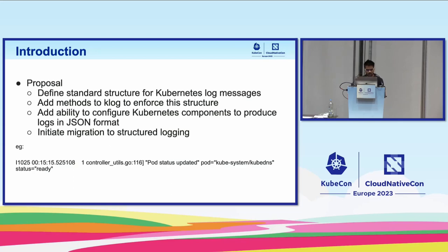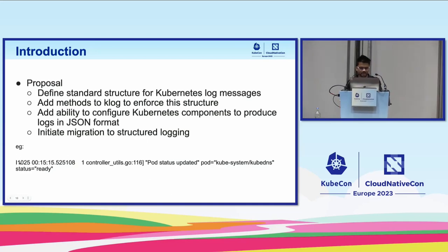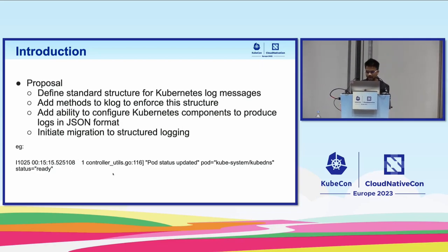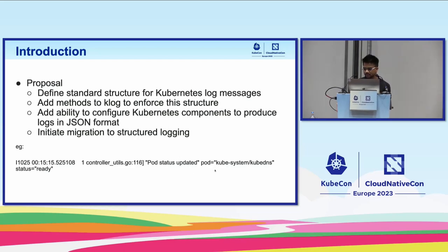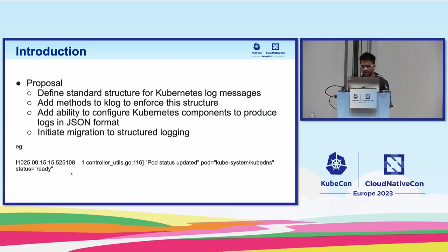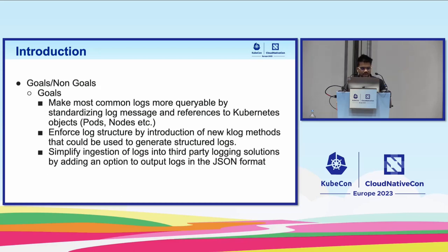Here's an example of a structured log: at the beginning we have an info message with a timestamp and the exact line from where the log is coming. Then we have the message, followed by key-value pairs — for example, pod with namespace/name and status. These key-value pairs can be dynamic and can be anything, but the structure will be covered in later slides.